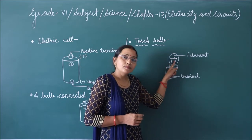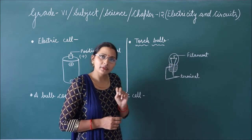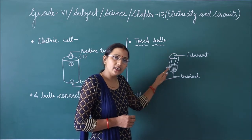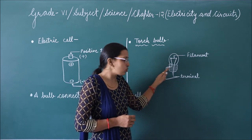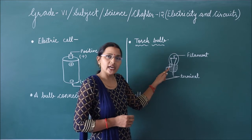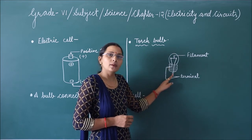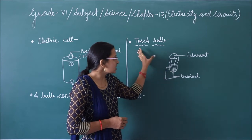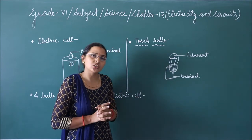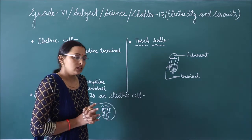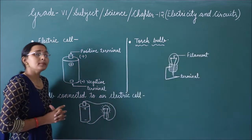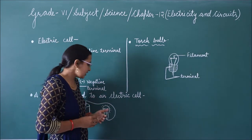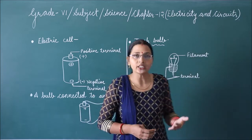This bulb also has two terminals — one on the side of the metal grooves and the other on the base. Now we will connect it and see how the circuit is complete.